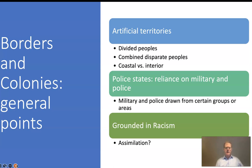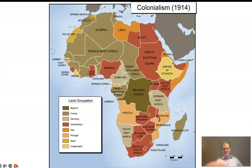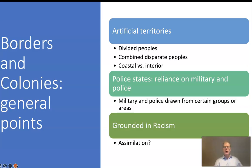On that map you see all these lines drawn, and a lot of these are the same borders of the independent countries today. These were drawn by Europeans — not sitting at a map in Europe but actually on the ground in Africa. They are totally artificial territories; these lines don't recognize pre-colonial states, they don't recognize ethnic groups. Very commonly these lines divided people and divided communities who should have been together, while at the same time combining disparate peoples together, which has caused a lot of conflict in contemporary Africa.